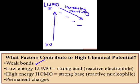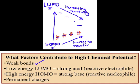Third is going to be a high-energy HOMO. The higher the energy of the HOMO, the more reactive that particular electron pair is going to be. And this very often correlates with a strong base or a reactive nucleophile. So the higher energy that HOMO is, the more reactive that particular compound is as a nucleophile.